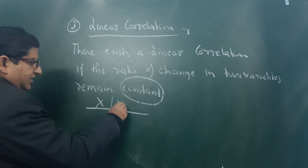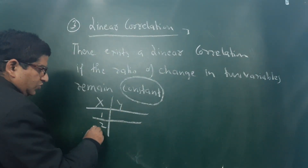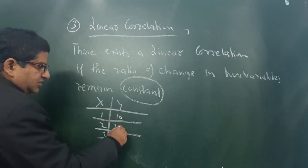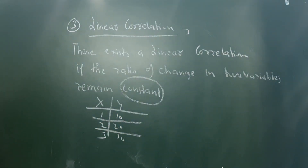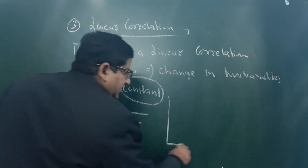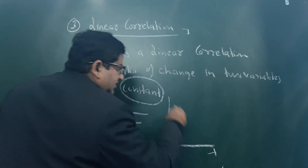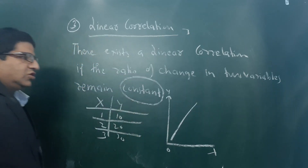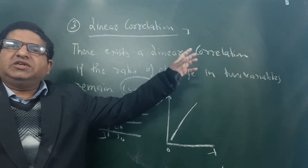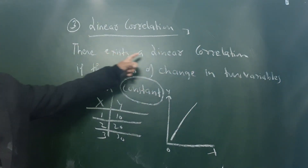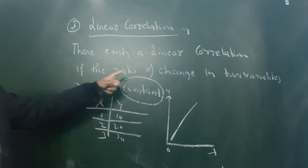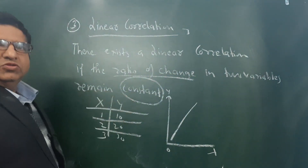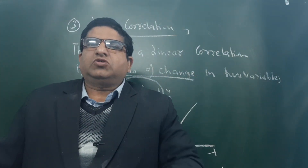For example, if x is 1, 2, 3 and y is 10, 20, 30 — the two variables are moving in a constant proportional manner. That is known as linear correlation. There exists a linear correlation if the ratio of change in two variables remains constant, and the two variables should move in constant proportion.